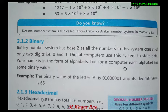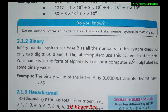The binary number system has a base of 2, as all numbers in the system consist of only two digits: 0 and 1. Since computers can only understand digital types of data, if we want to store our data in digital form, we need the binary number system. Digital computers use this system to store data. Your name is in the form of alphabets, but for a computer, each alphabet has some binary values.